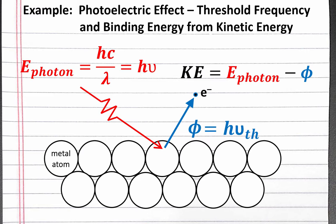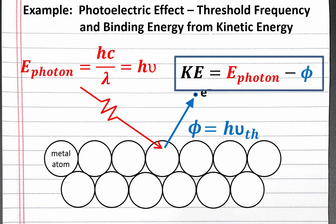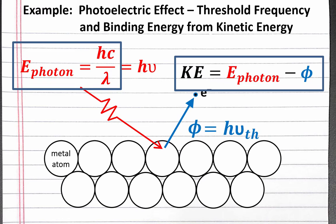In Part A of our problem, we're asked to find the binding energy of the metal, and we're given the kinetic energy of the ejected electron. We'll need to use the kinetic energy equation. We're also given the wavelength of the photon, so we'll use hc over lambda to calculate the energy of the photon. In Part B, we're asked to change the units of the binding energy from joules to kilojoules per mole of electrons, which we can do using dimensional analysis. In Part C, we're asked to find the threshold frequency of the metal, using our binding energy equation to solve for threshold frequency. Now that we have a plan, let's get started with the math.